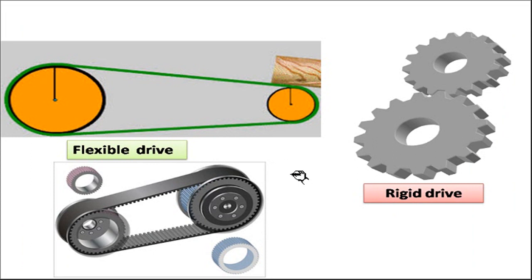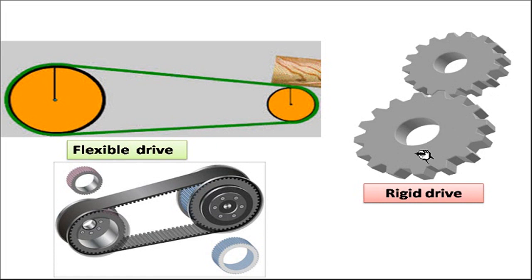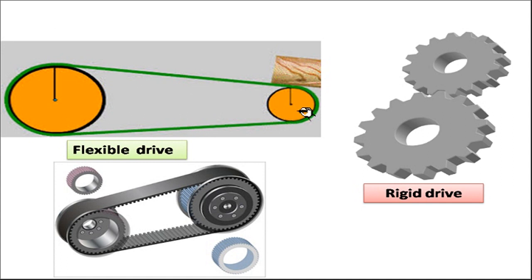There are two types of drives: one is a rigid drive, such as a gear drive, and the other is a flexible drive, which can be a belt, rope, or chain drive. In a rigid drive, there is direct contact between the driving and driven shaft through a pinion and gear — the rotary motion of the pinion is transferred directly to the gear. In a flexible drive, the input pulley transfers its motion through an intermediate link, which may be a belt, rope, or chain, and from that intermediate link the motion is given to the output shaft.